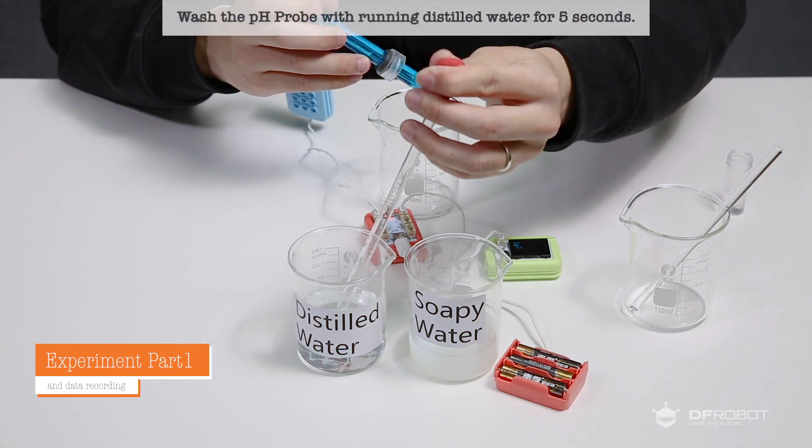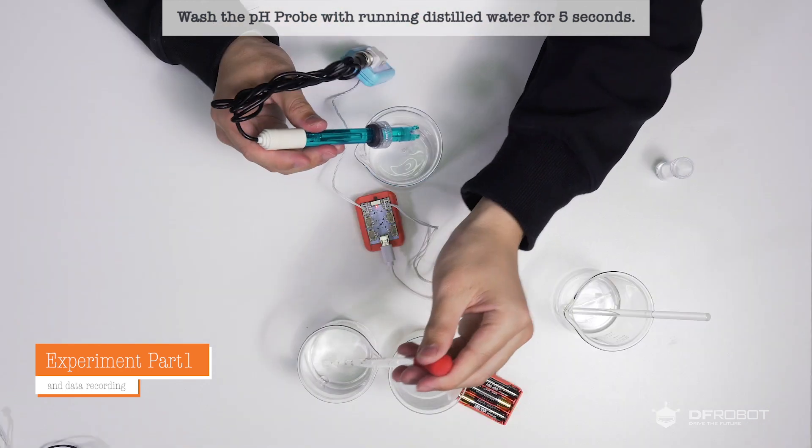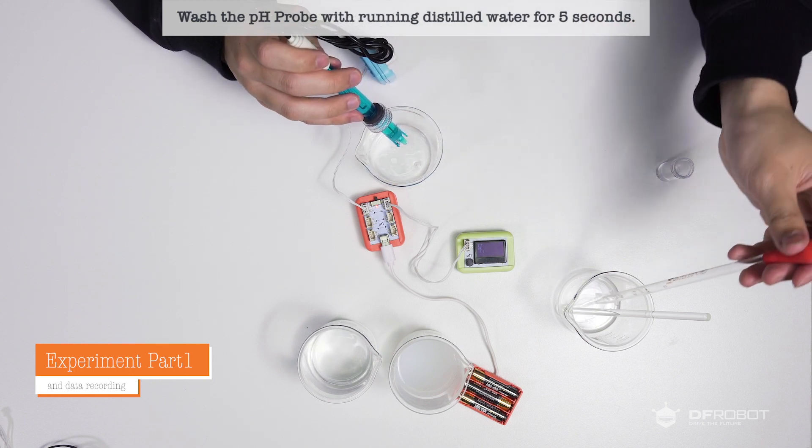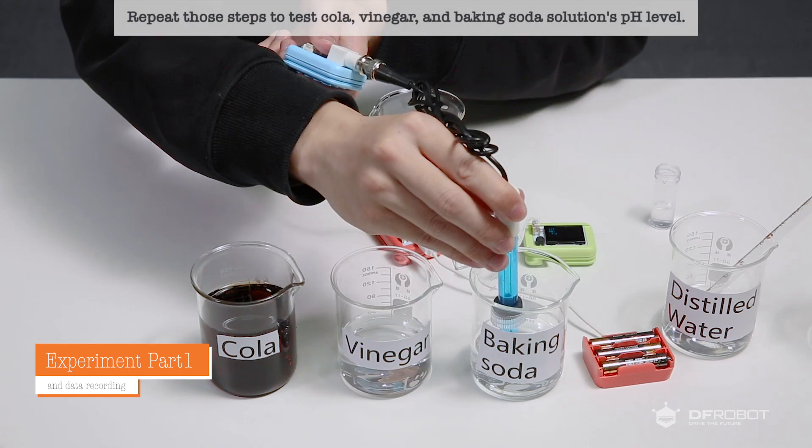Then we need to wash the pH probe with running distilled water for five seconds. Next let's also try cola, vinegar, and baking soda solution.